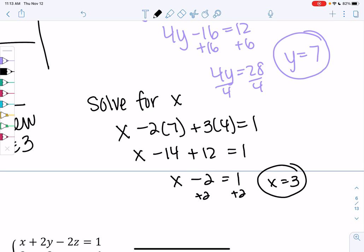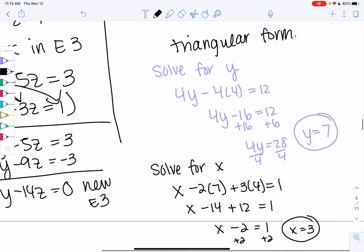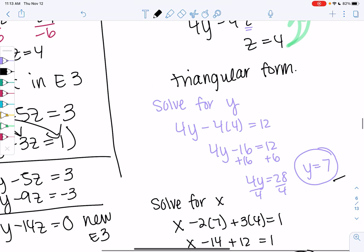And that's it. We'll just write it as an ordered triple. So 3, 7, 4, and that's our solution. And you can always plug into the original equations to check your solution.